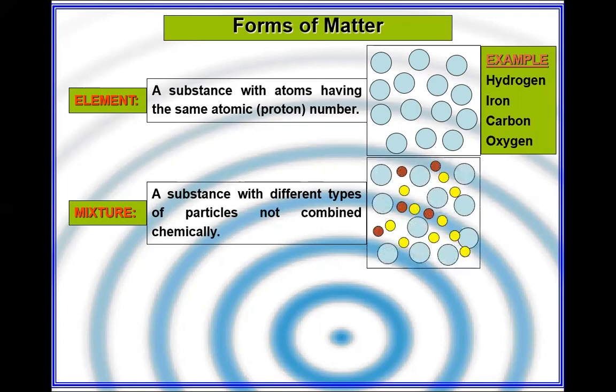We can separate mixtures by using simple physical methods depending upon the nature. We can separate solids from liquids. If there are two miscible liquids, then we will go for fractional distillation, as we discussed in the last class.